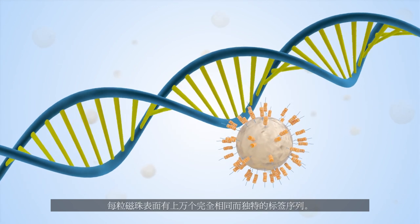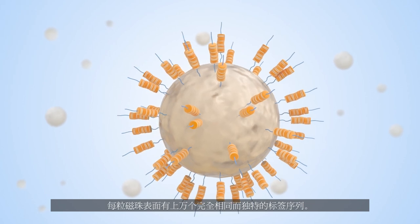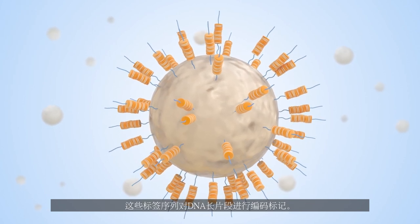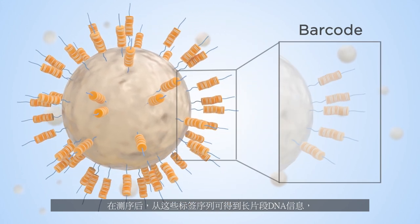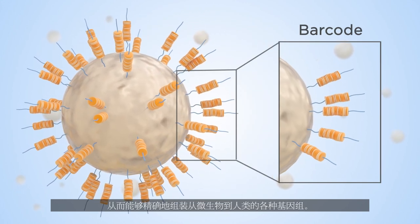Each bead contains at least one unique barcode sequence, conjugated on the surface. This allows them to uniquely barcode long DNA molecules and to assemble genomes ranging from microbes to human.